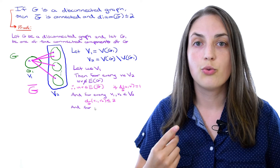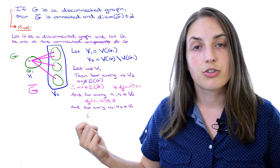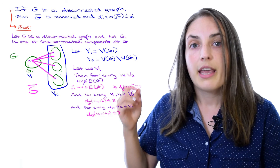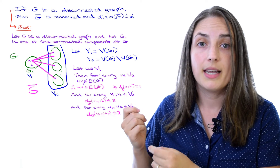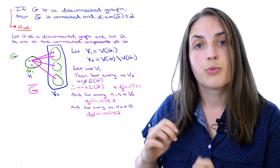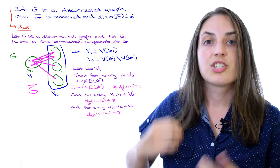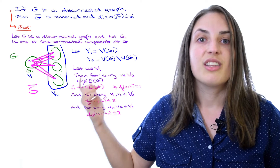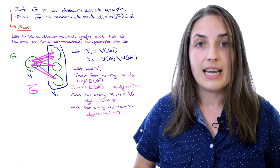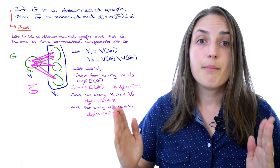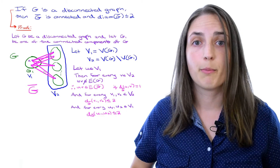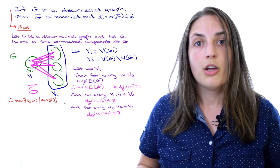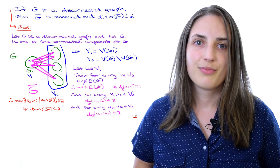Next consider two vertices u1 and u2 from my set V1. I want to show they are connected to each other by a path of length at most two. They may or may not have an edge between them, but since both were in V1, they all have pink edges going to the other side. I can follow a pink edge from one of them into V2 and then back to the other. So in the complement graph, those vertices are at distance at most two. I've considered every possible pair of vertices and found distance is at most two, meaning all eccentricities are at most two, so the diameter is at most two. That concludes the proof.